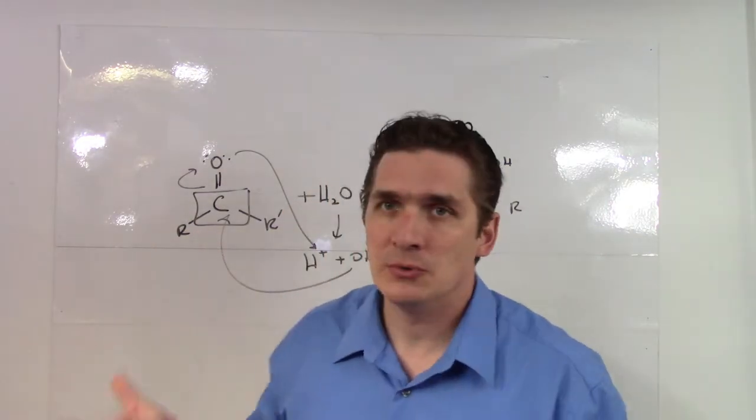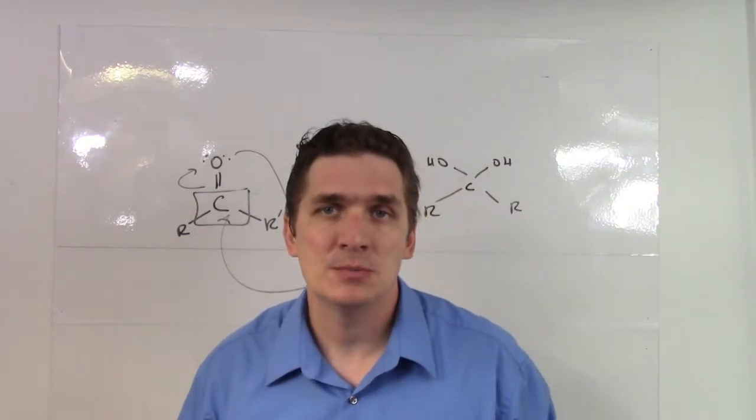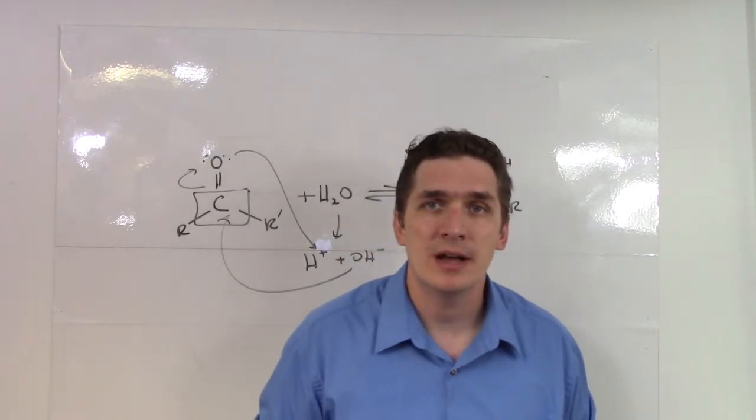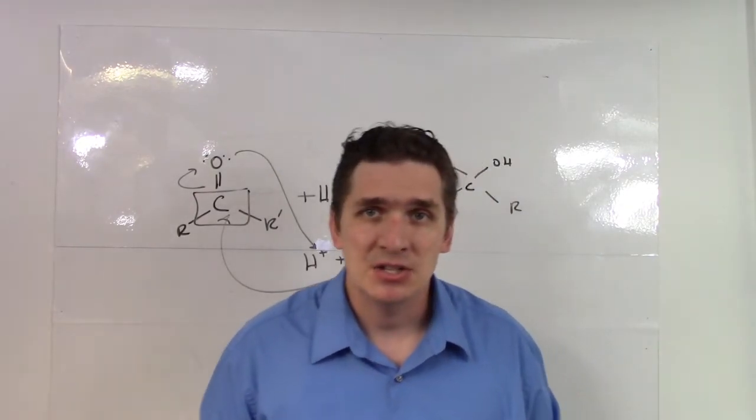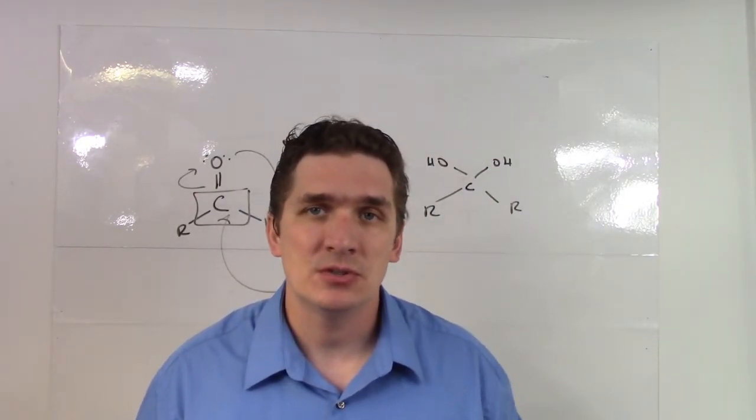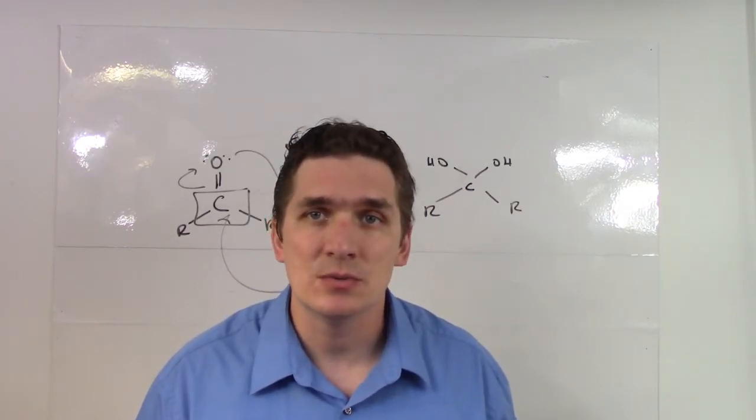Particularly with the R and the R prime groups written here, if the R and the R prime groups are very electron withdrawing, so you have something like a halogenated carbon, or you have functional groups attached to it that are very electron withdrawing, such as nitro groups,